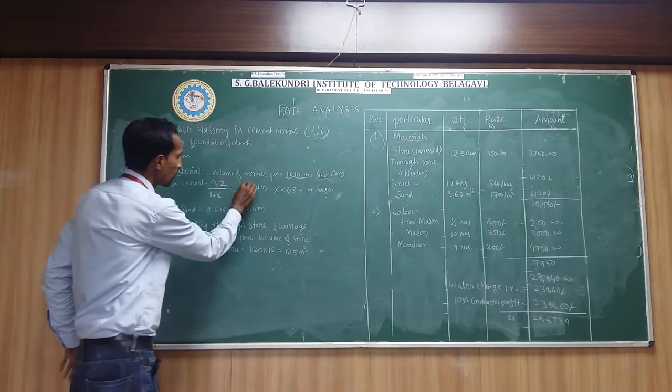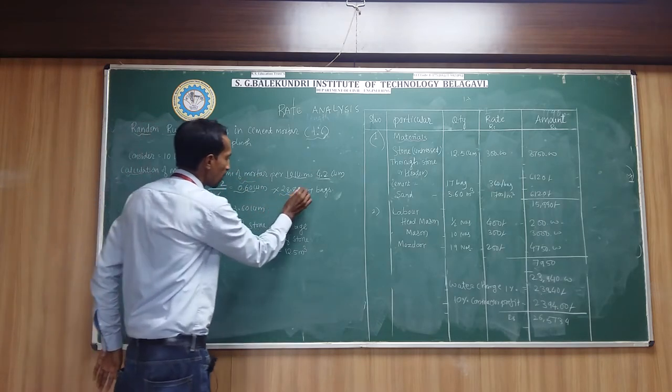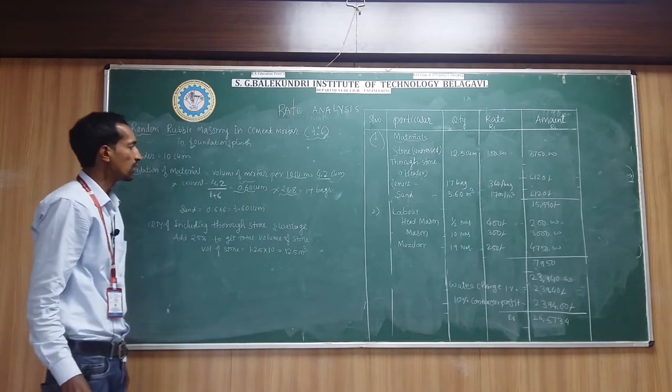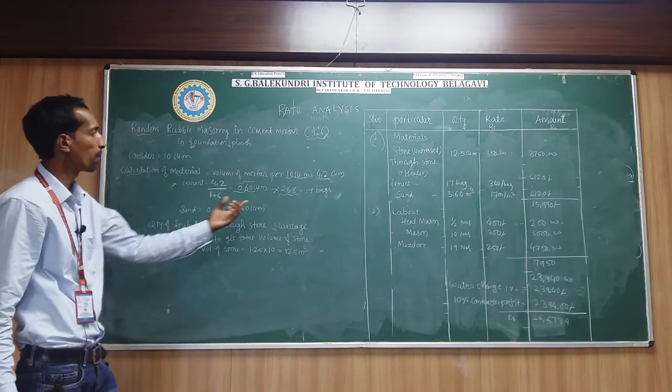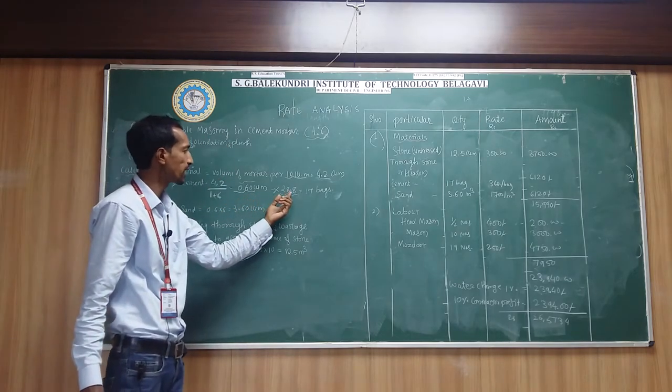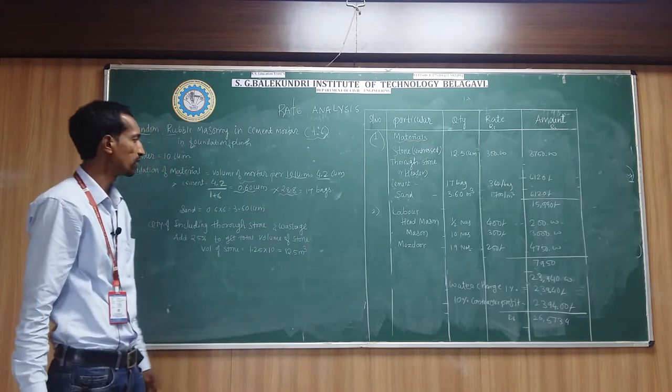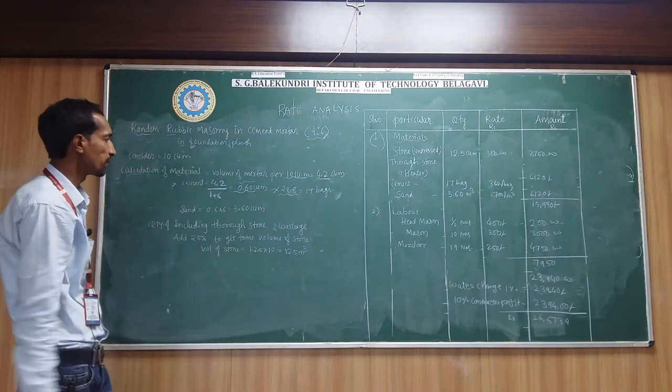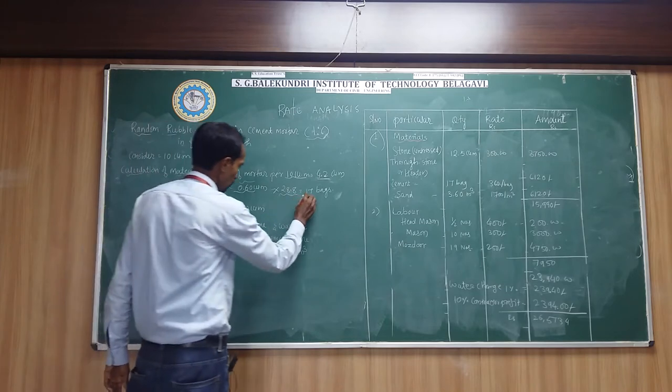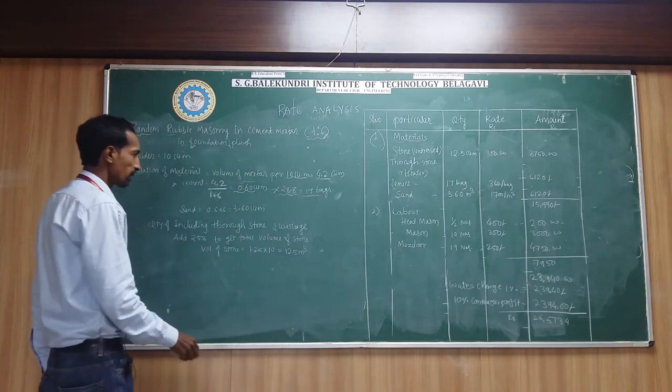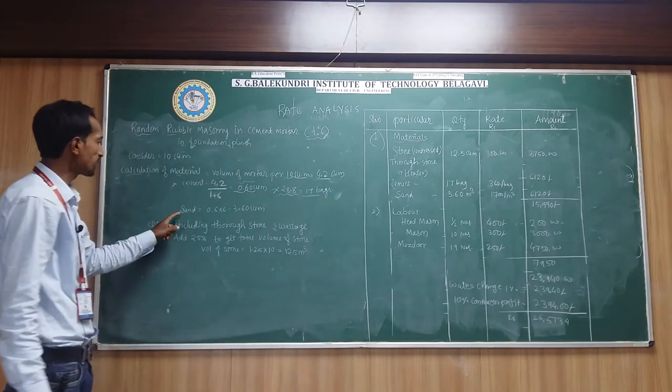This much is the volume of cement. Multiply 28.8 - this is 1 meter cube volume of bags. 28.8 bags are contained in 1 meter volume of cement. You will get total here 17 bags and sand.